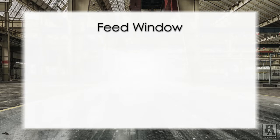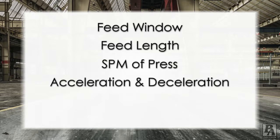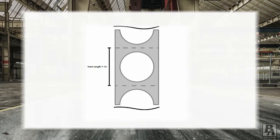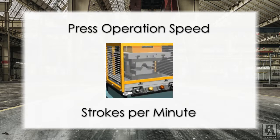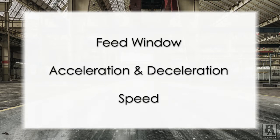The feed window is important when dealing with sink faults, but it is also affected by the feed length, the strokes per minute the press is operating at, the acceleration and deceleration, and in some cases the speed of the feeder. The feed length is the controlling factor here — it is specific to the operation and cannot be changed. The operating speed of the press can be reduced to help prevent sink faults, but it is not ideal because doing so would slow production. That leaves the feed window, the acceleration and deceleration, and the speed of the feeder.